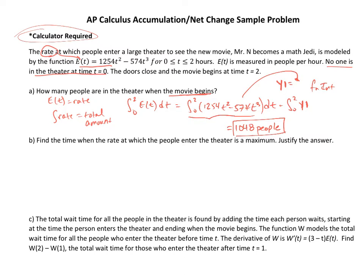For this one, it says find the time when the rate at which the people enter the theater is a maximum. I'm looking for a maximum. There's a couple ways to do this problem, but they want you to justify the answer. You could graph it and look for the maximum, but you need to test the endpoints. That's really important because we want an absolute maximum.